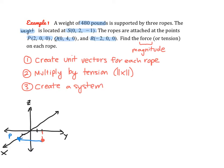The next anchor is at Q: (0, 4, 0), right here. Our last anchor point R is at (-2, 0, 0), which is at negative 2 on the x-axis. And point S is the location of the weight.